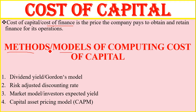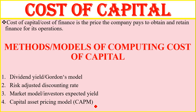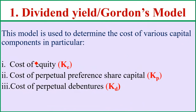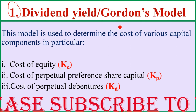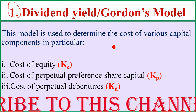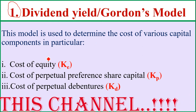There are various methods or models used to compute the cost of capital. These include: the dividend yield model or Gordon's model, risk-adjusted discounting rates, the market's model or investor's expected yield, and the capital asset pricing model (CAPM). In this tutorial I'm going to focus on the first model — the dividend yield or Gordon's model.